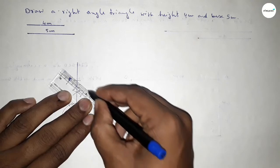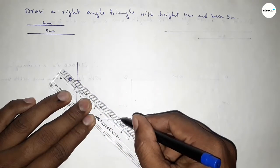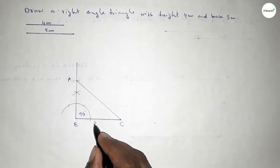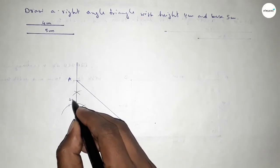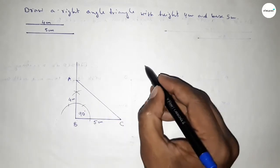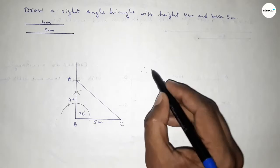So joining this side, so this side is 5 centimeters and this side is 4 centimeters. So therefore triangle ABC.